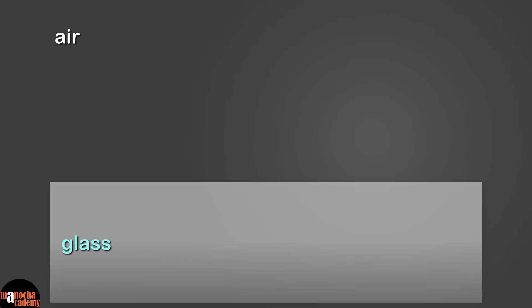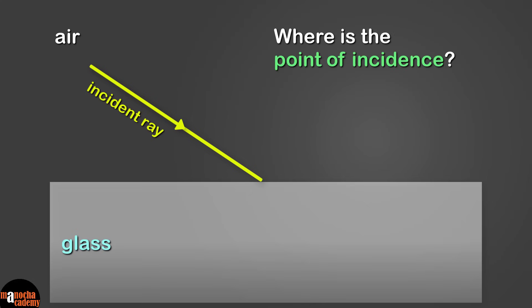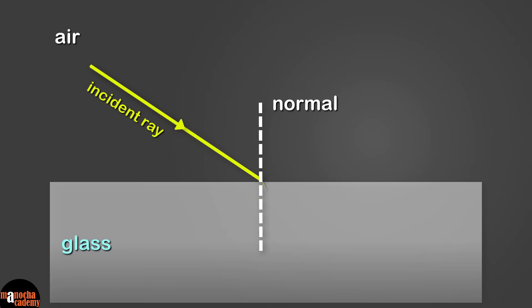Let's look at some terms first. This ray of light is called the incident ray. Do you know where is the point of incidence? That's right, it's here. The point where the incident ray hits the second medium is called the point of incidence. Now let's draw an imaginary line perpendicular to this boundary between the two materials. This perpendicular line is called the normal.